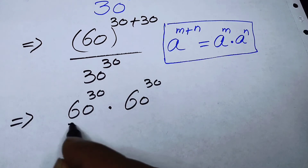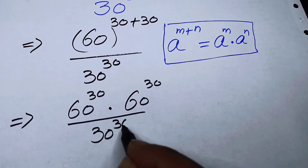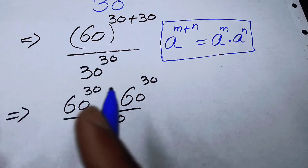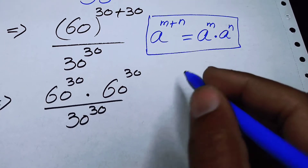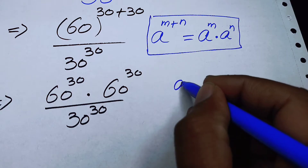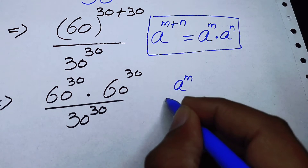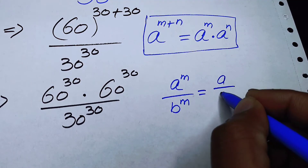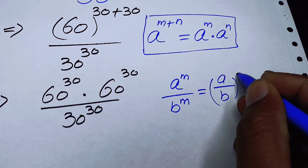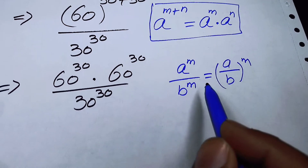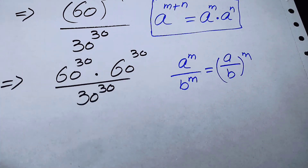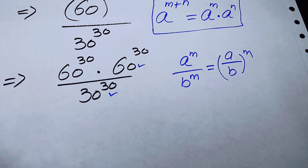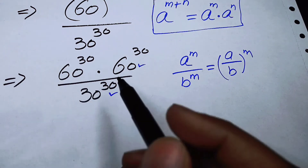Applying this law gives us 60 to the power of 30 times 60 to the power of 30, all over 30 to the power of 30. Now we use another well-known exponent law: a to the power of m over b to the power of m equals (a over b) to the whole power of m.